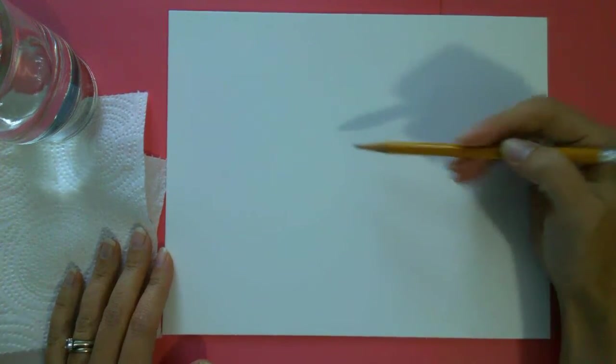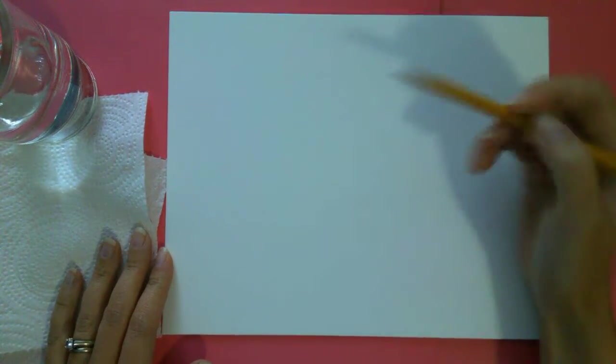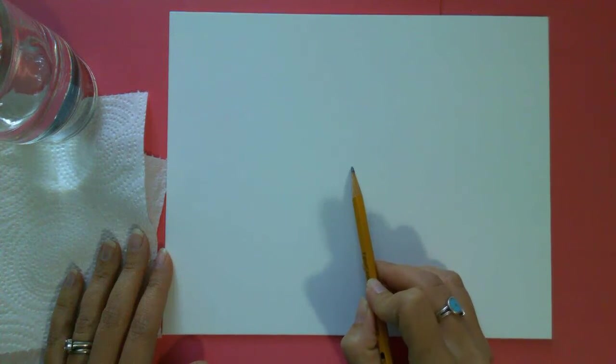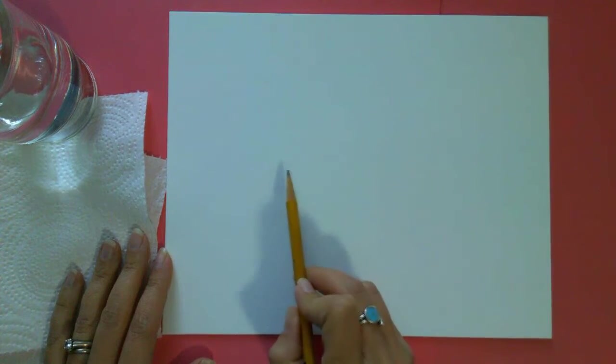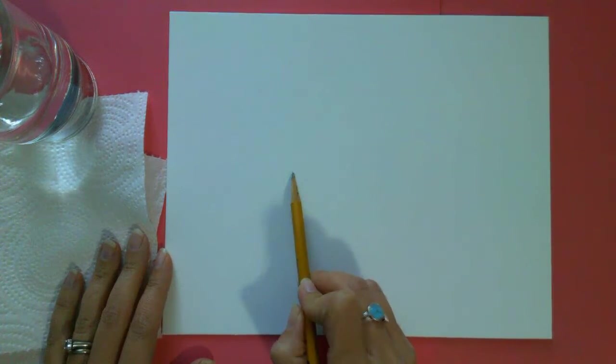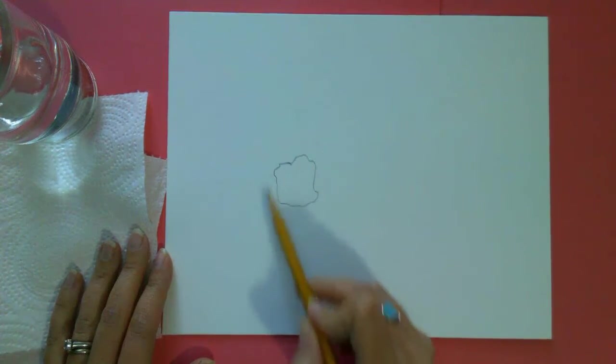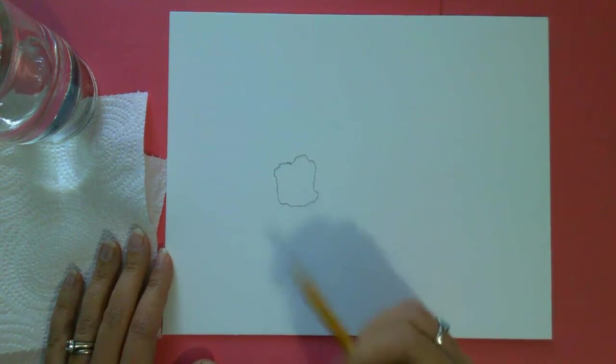So to start with, we need to make the center of the flower. We're not going to do it right in the middle of our page because putting it right in the middle is really quite boring. Everyone does that and we are trying to be a little bit different. So let's move it over a little bit. Okay, we're going to make a squiggly middle line. It's like a circle, like a squiggly circle.